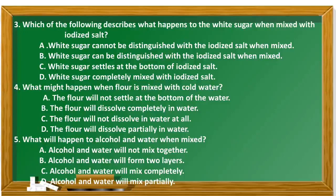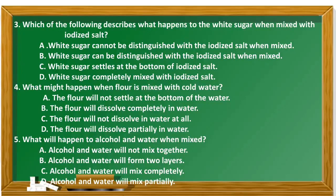Number 3. Which of the following describes what happens to the white sugar when mixed with iodized salt? A. White sugar cannot be distinguished from the iodized salt when mixed. B. White sugar can be distinguished from the iodized salt when mixed. C. White sugar settles at the bottom of iodized salt. D. White sugar completely mixed with iodized salt. The correct answer is Letter A.